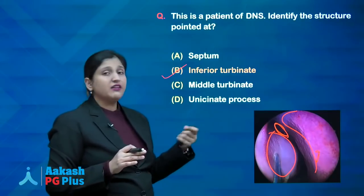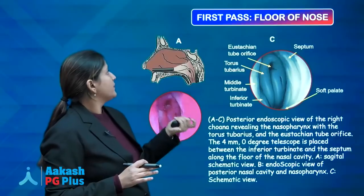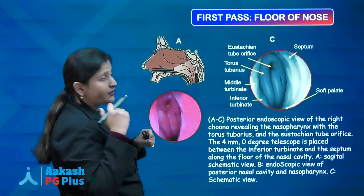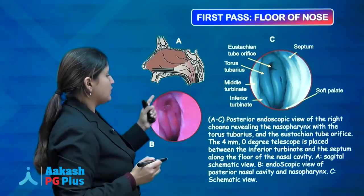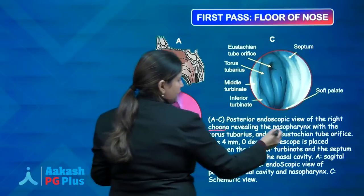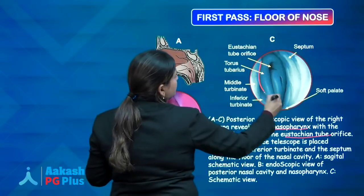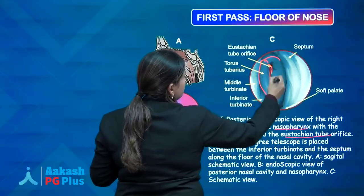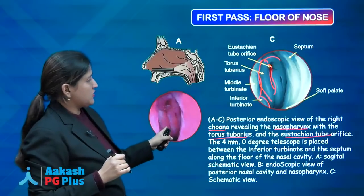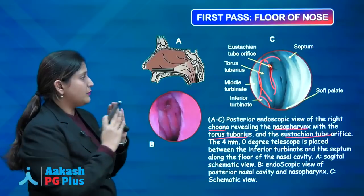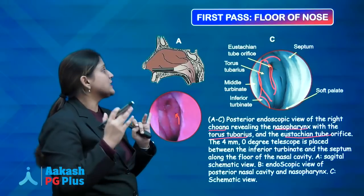Using an endoscope, you must know the structures visible. In the first pass, the endoscope is passed along the floor of the nose. You can visualize the right choana where the nasopharynx is seen: the torus tubarius, the eustachian tube orifice, the middle turbinate, the inferior turbinate, and the septum. Posteriorly you see the torus tubarius, eustachian tube orifice, and the fossa of Rosenmüller — this is where nasopharyngeal carcinoma originates.